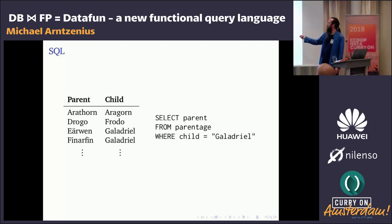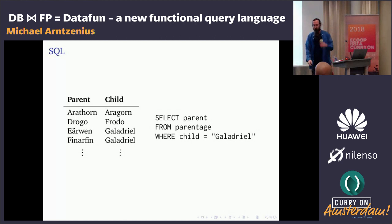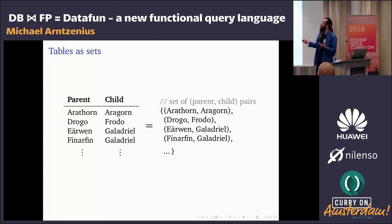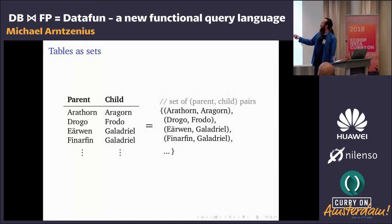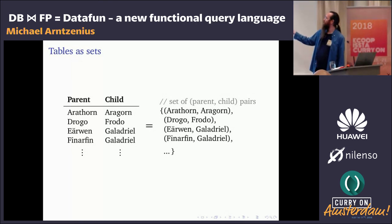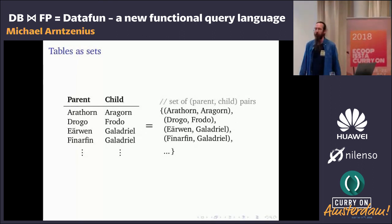I want you to think of tables not as tabular arrays, but as sets. Each row in a table is an element of that set — specifically, a tuple. So instead of a table, think of it as a set of pairs: the first part is the parent, Arathorn, and the second part is the child, Aragorn. This is basically swapping square-bracket table notation for curly braces and commas.